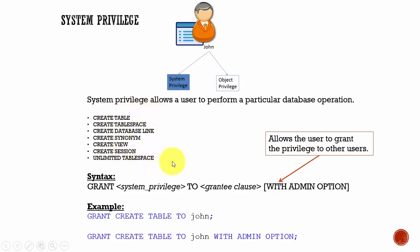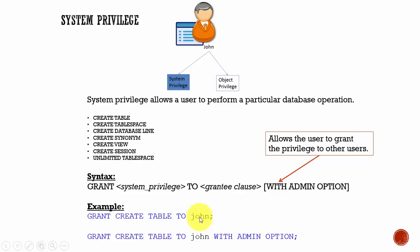If the DBA has to assign a system privilege, the syntax is: GRANT system_privilege_name TO grantee. There is also a special clause, WITH ADMIN OPTION. For example, GRANT CREATE TABLE TO John — John can create a table in his schema. But if we say GRANT CREATE TABLE TO John WITH ADMIN OPTION, John can create a table and also grant that privilege to other users.